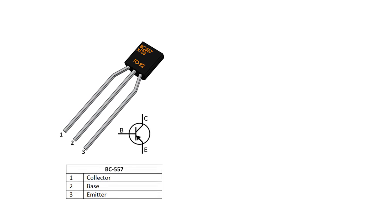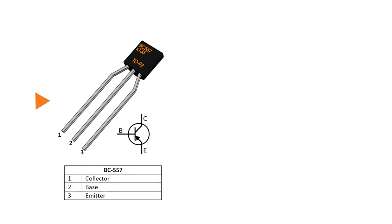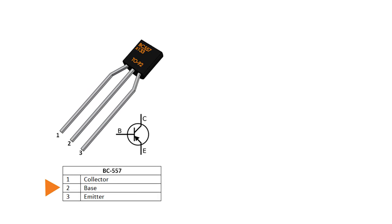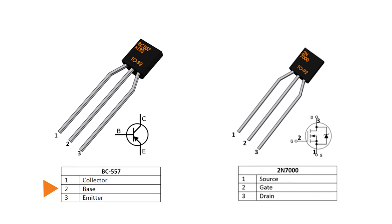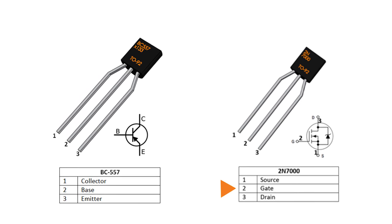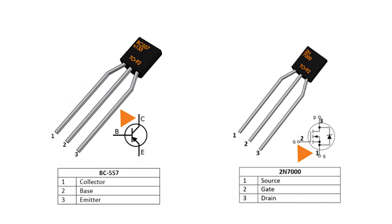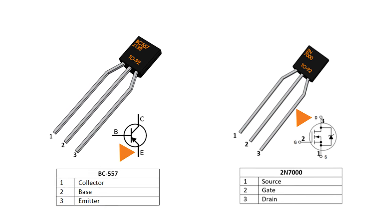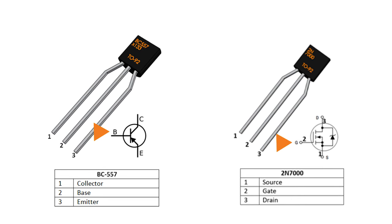Previously we learned about Bipolar Junction Transistors, BJTs. They have a collector, emitter, and base. FETs instead have a source, drain, and gate. The source can be compared to the collector, the drain like the emitter, and the gate performs similarly to the base.